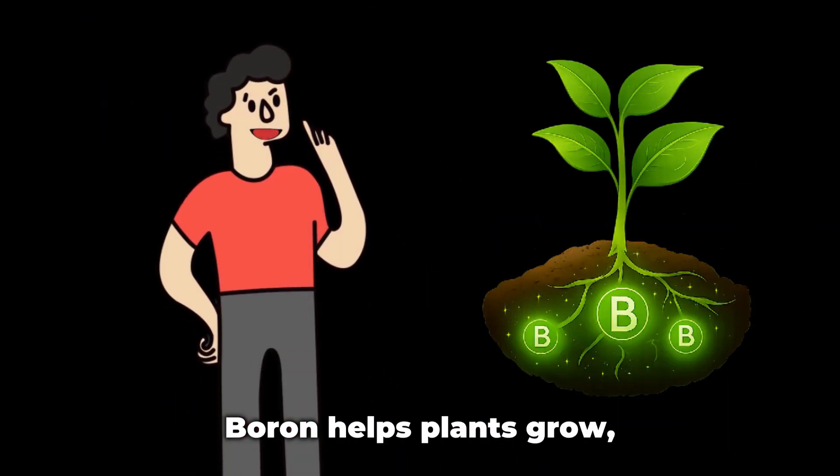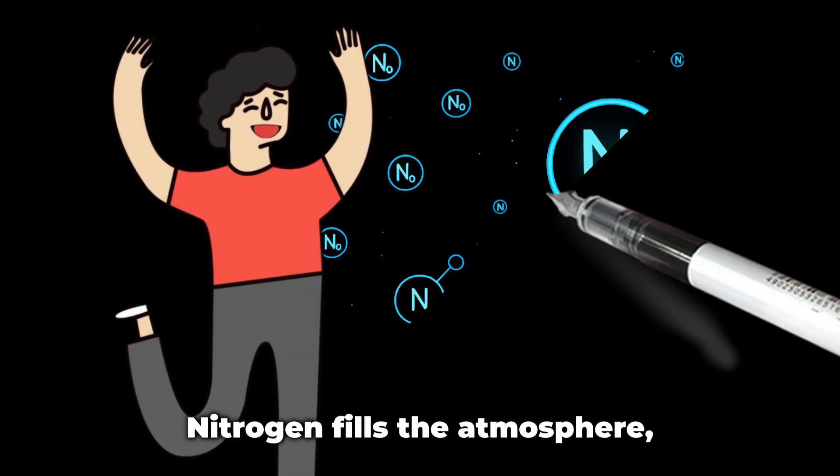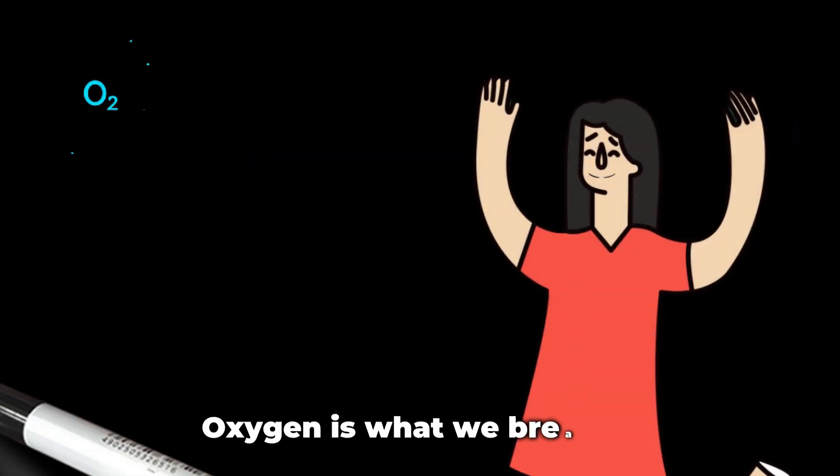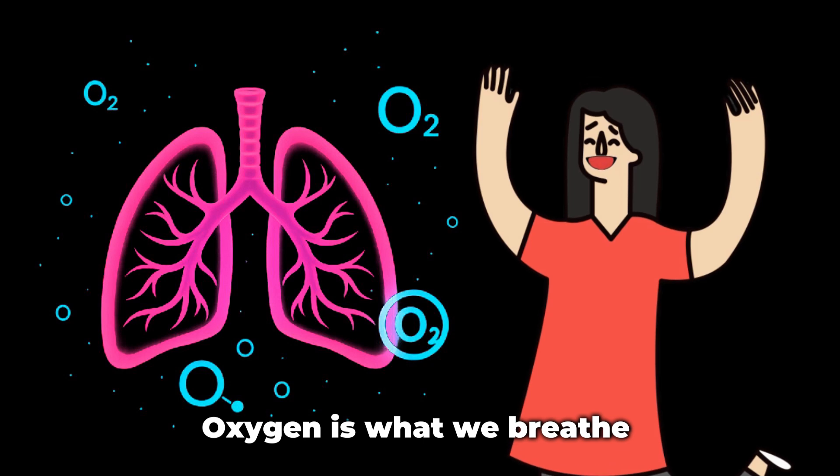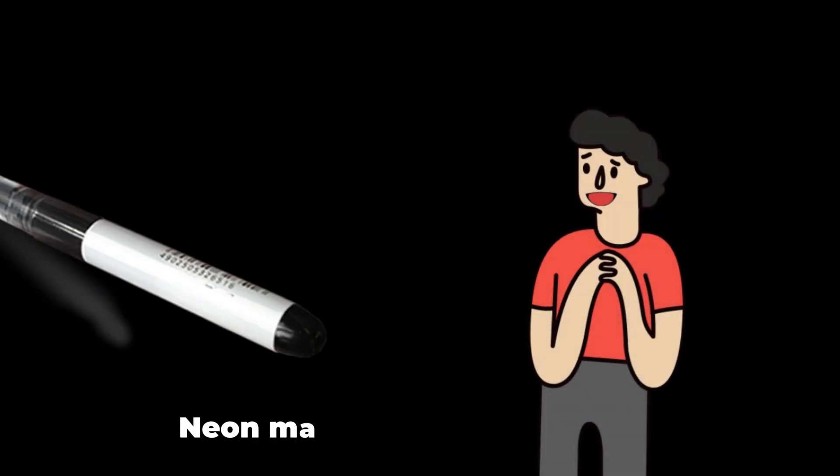Boron helps plants grow. Carbon is the king of life. Nitrogen fills the atmosphere. Oxygen is what we breathe. Fluorine's most reactive. Neon makes signs glow bright.